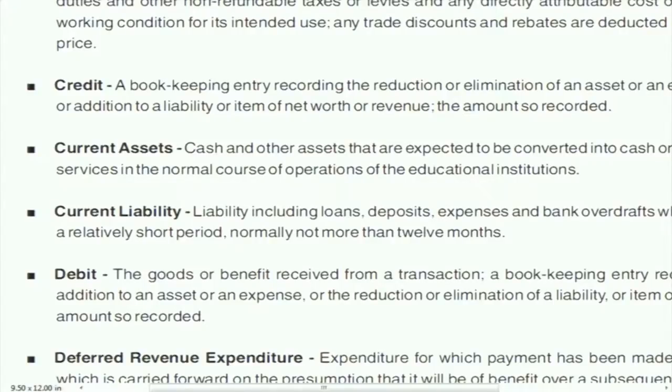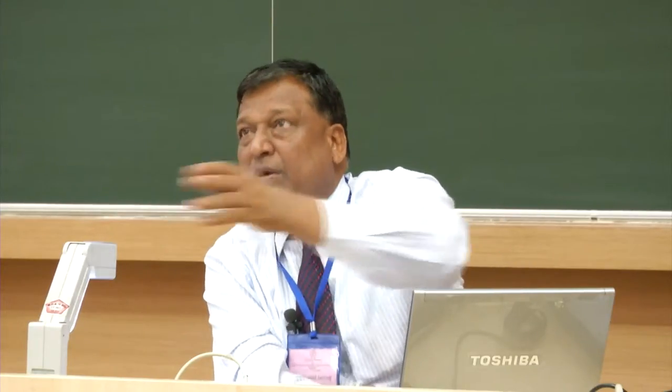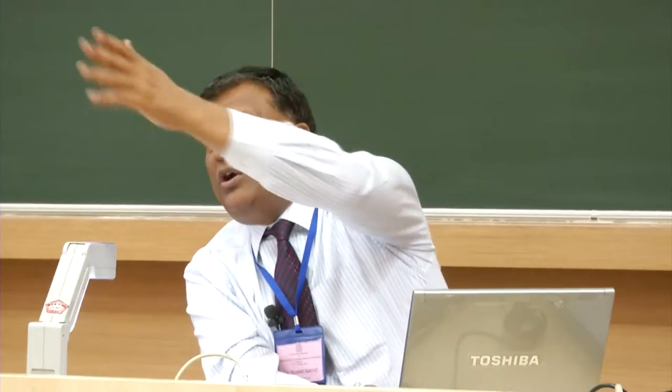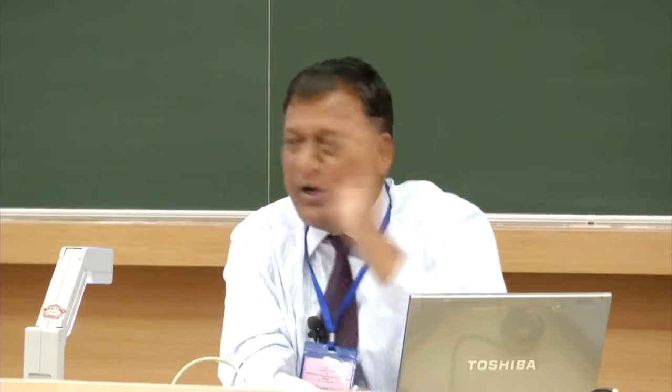In some industries the operating cycle — purchase, sale, realization — may be two, three, or four years. For example, in a shipping industry, constructing a ship may take four or five years. So that operating cycle period applies to current liability, not just one year normally.